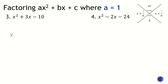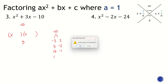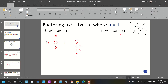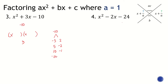Next example. We have negative 10 on top and 3 at the bottom. A is 1, so AC is negative 10. We need numbers that when multiplied give negative 10: negative 5 and 2, 5 and negative 2, 10 and negative 1, negative 10 and 1. Which pair gives a sum of positive 3? That's 5 and negative 2. So the answer is X plus 5, times X minus 2.